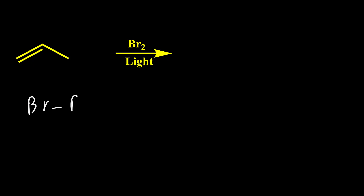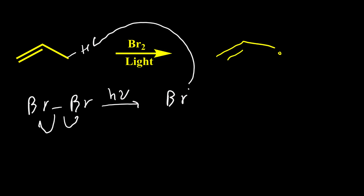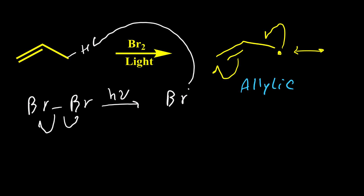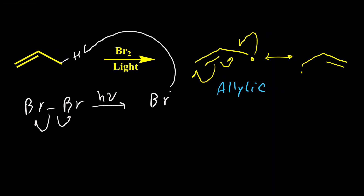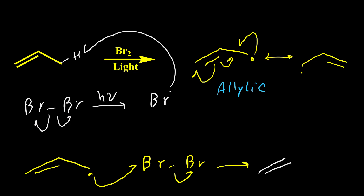Let's start this reaction with a very simple example. First, light breaks the bromine molecule and forms a bromine radical, and then the bromine radical abstracts a hydrogen at the allylic position and produces this radical. The position next to the double bond is called the allylic position. A radical on this position is very stable — even more than a tertiary radical — because of resonance. This radical can undergo resonance and it has another structure.